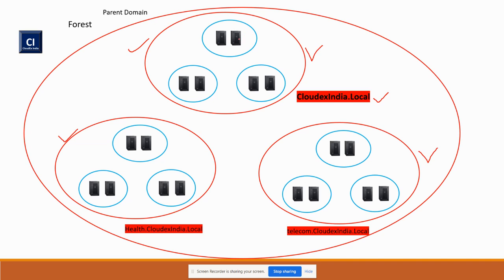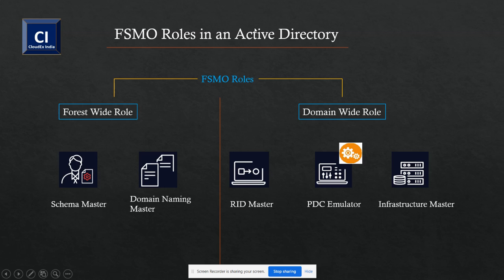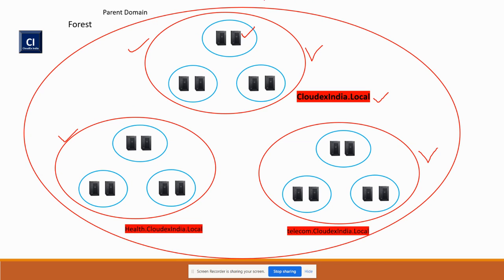Any domain controller can hold this role. Schema master basically maintains the class and attribute. If you want to update the class or attribute inside the complete forest, you have to do this activity from the parent domain — from that particular domain controller. Once done, it will replicate to all DCs inside that domain, and also replicate the same changes to other domains inside the forest.